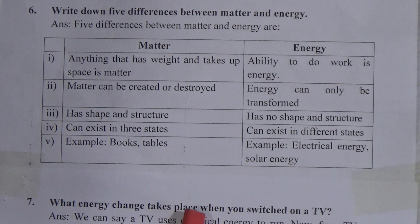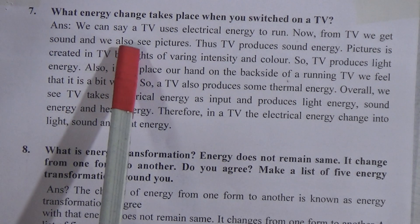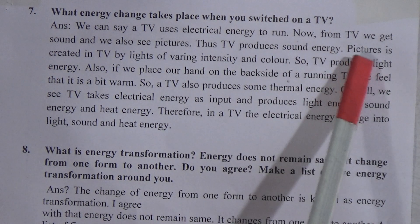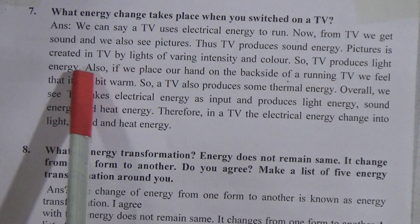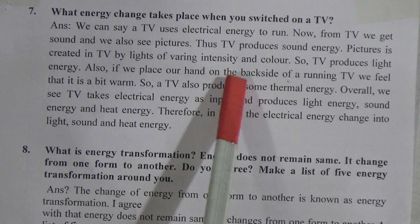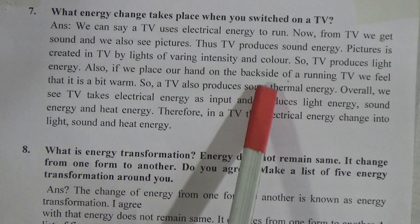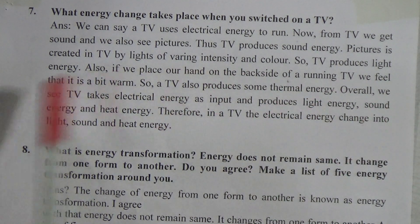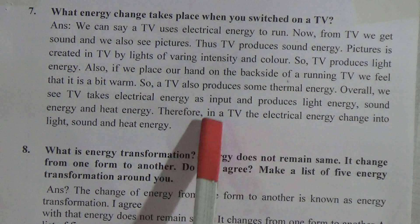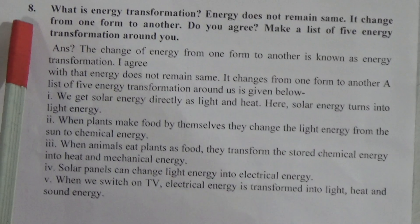Examples of matter are books, tables, etc., and examples of energy are electrical energy, solar energy, light energy, etc. Now question number 7: What energy change takes place when you switch on a TV? A TV uses electrical energy to run. From a TV we get sound and we also see pictures. TV produces sound energy. Pictures are created in a TV by light of varying intensity and color, so TV produces light energy. If we place our hand on the backside of a running TV, we feel it is a little bit warm, so a TV also produces some thermal energy. Overall, a TV takes electrical energy as input and produces light energy, sound energy, and heat energy. Therefore, in a TV, electrical energy changes into light, sound, and heat energy.